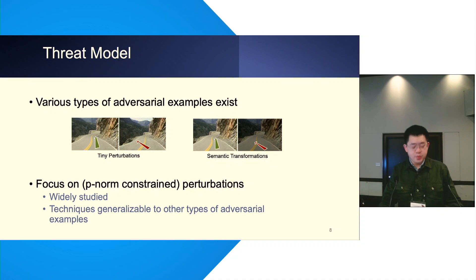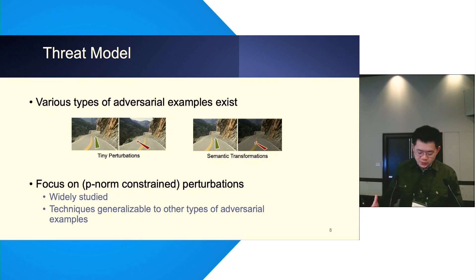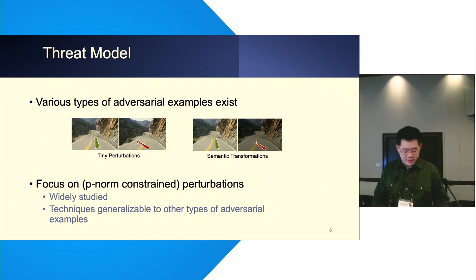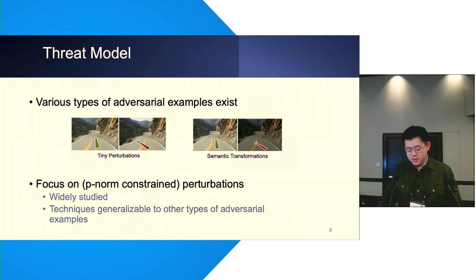The goal of this research is to provide robustness guarantees for deep neural networks against adversarial examples. Canonically, adversarial examples are similar inputs that may fool the model to give wrong predictions. There are many types of adversarial examples, like by adding tiny perturbations or by conducting semantic transformations. In this work, we focus on certified robustness against P-norm constrained perturbations, since this type is widely studied and their techniques are generalizable to other types.